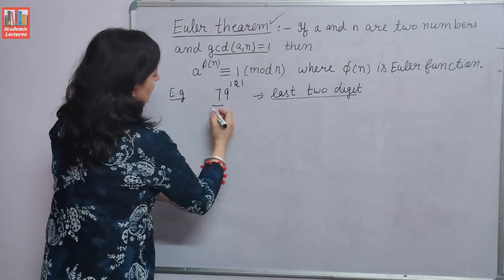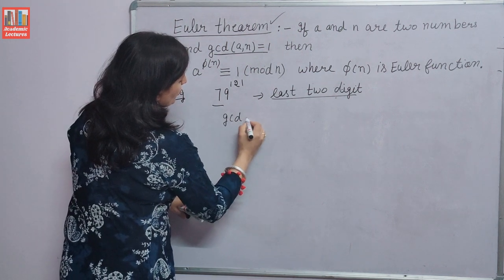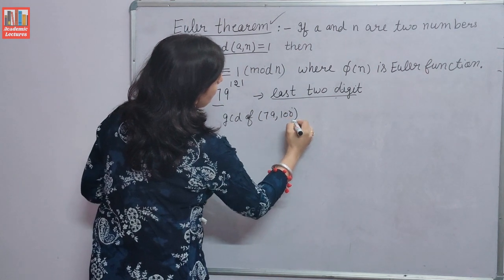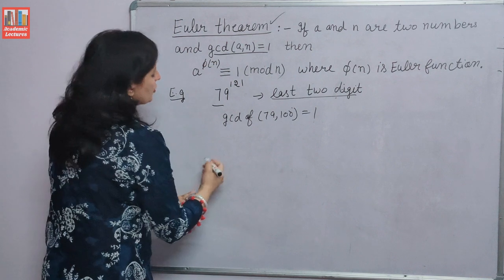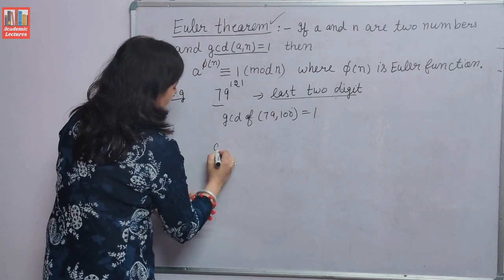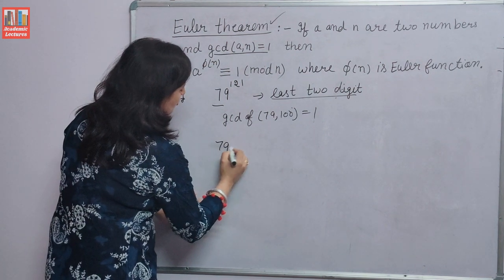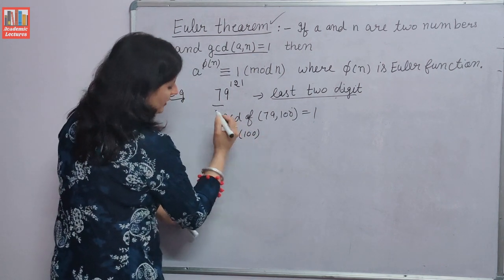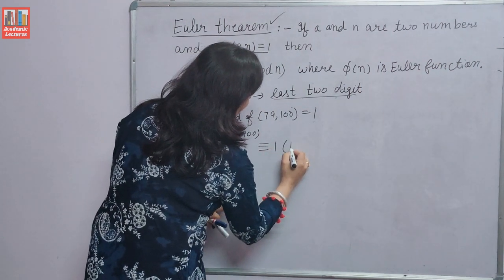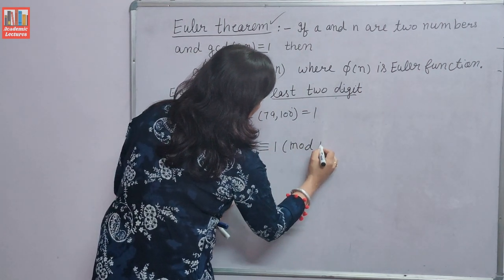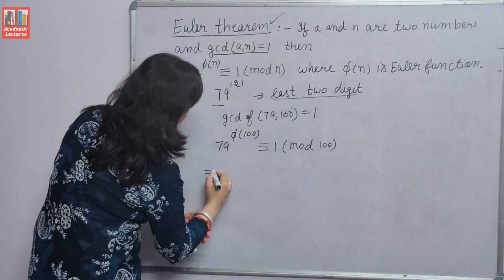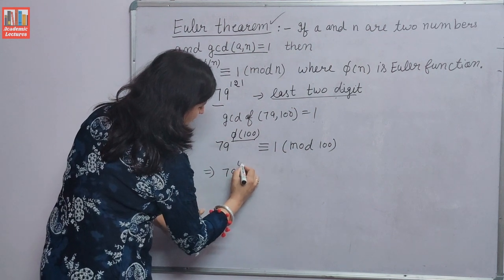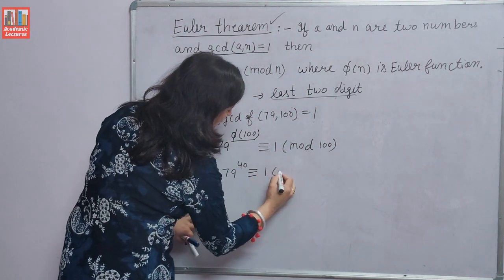Here we need to check GCD of 79 and 100, which is 1. So we can use Euler's theorem. A raised to the power phi(N): 79 raised to the power phi(100) is congruent to 1 modulo 100. phi(100) = 40, so 79 raised to the power 40 is congruent to 1 modulo 100.